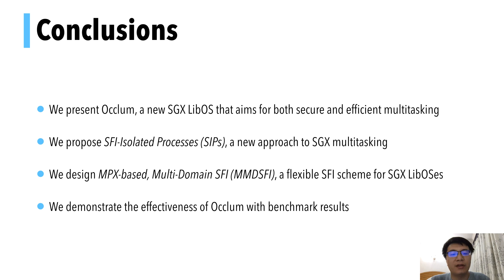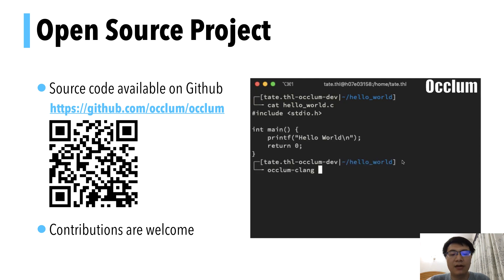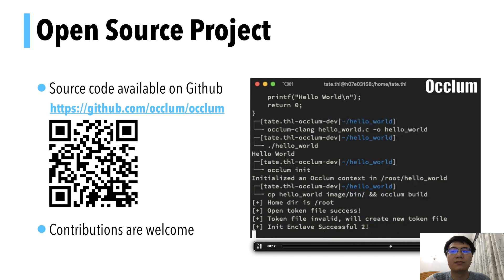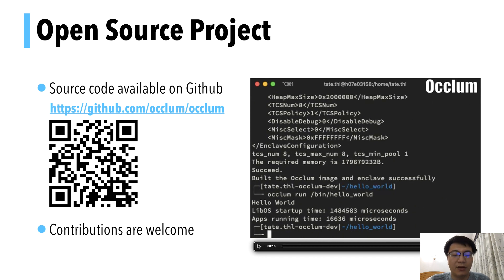We present Occlum, a new SGX LibOS that aims for both secure and efficient multitasking. We propose SFI-isolated processes as a new approach to SGX multitasking, and design the MPX-based multi-domain SFI as a flexible SFI scheme for SGX LibOSes. We demonstrate the effectiveness of Occlum with benchmark results. Occlum has gone beyond a research project — we want to make an open-source SGX LibOS useful to the community. Running a hello-world program in SGX with Occlum is simplified to just three commands. Thank you everyone.